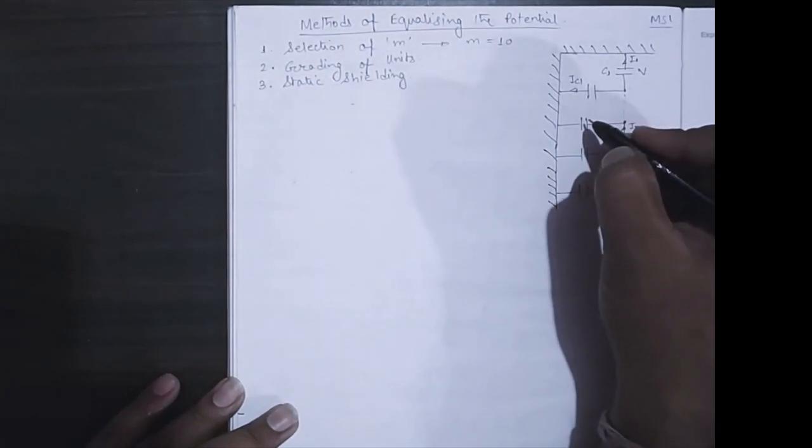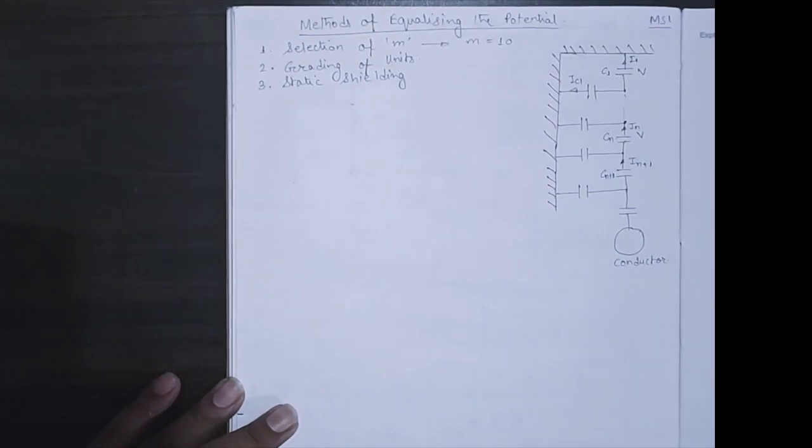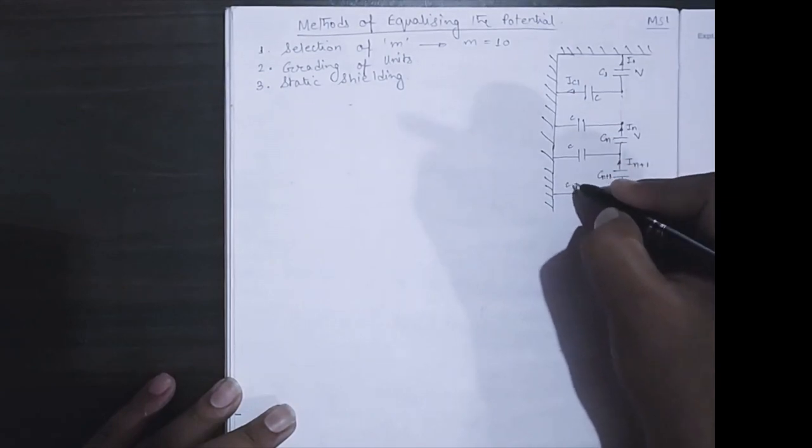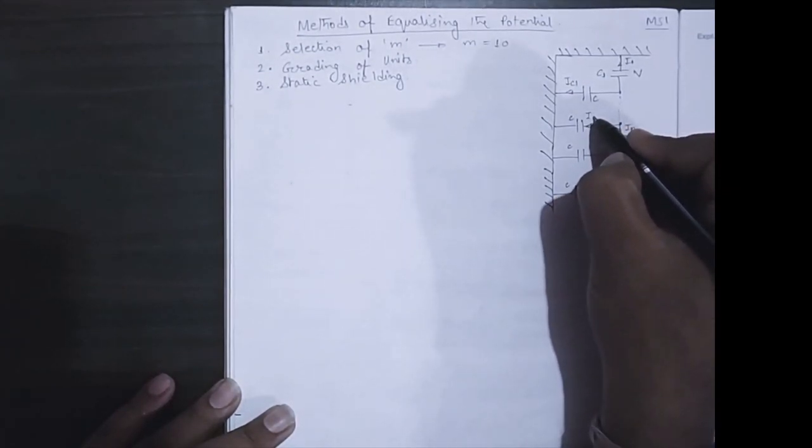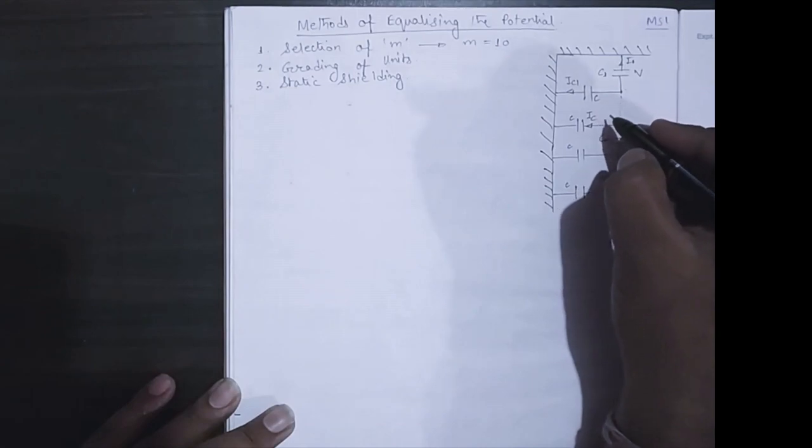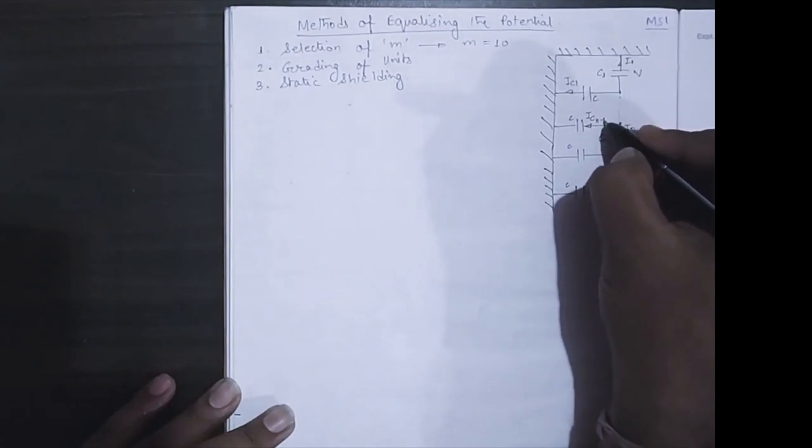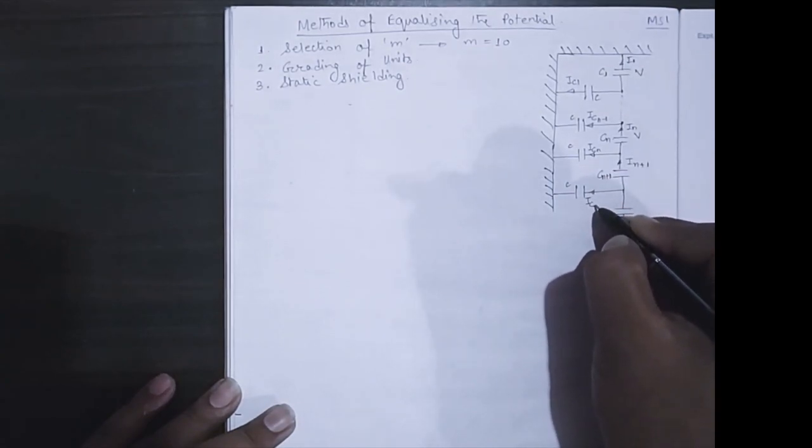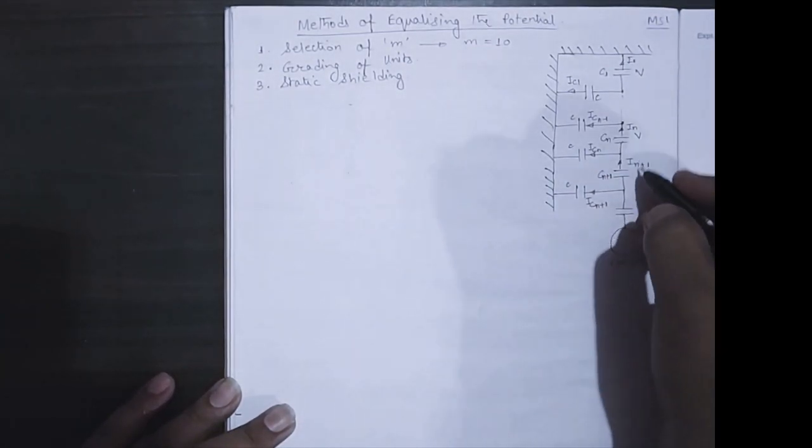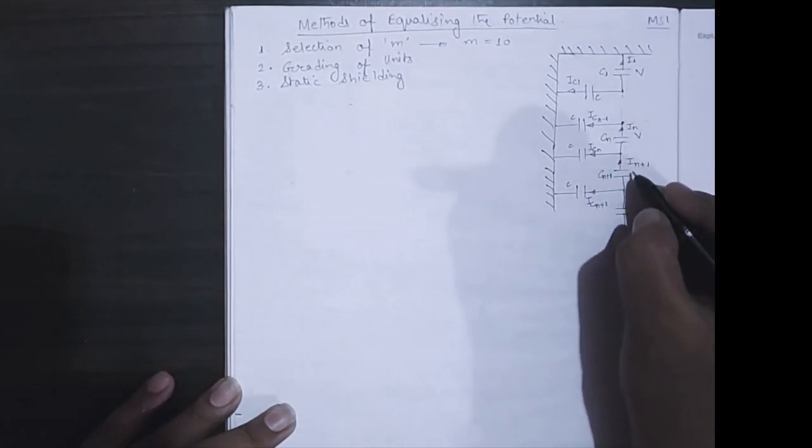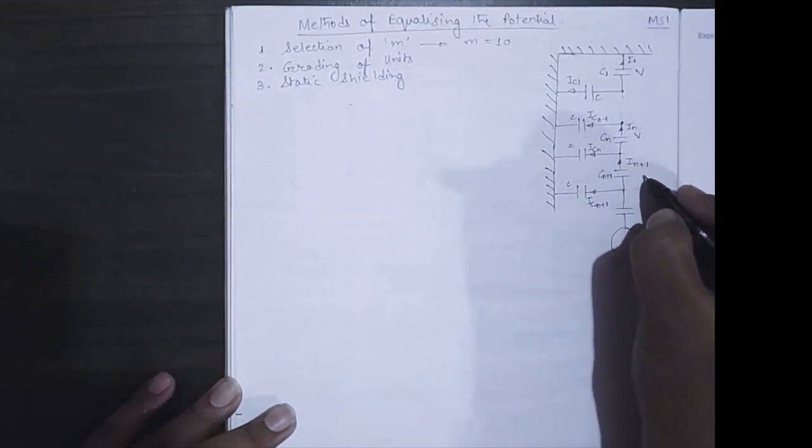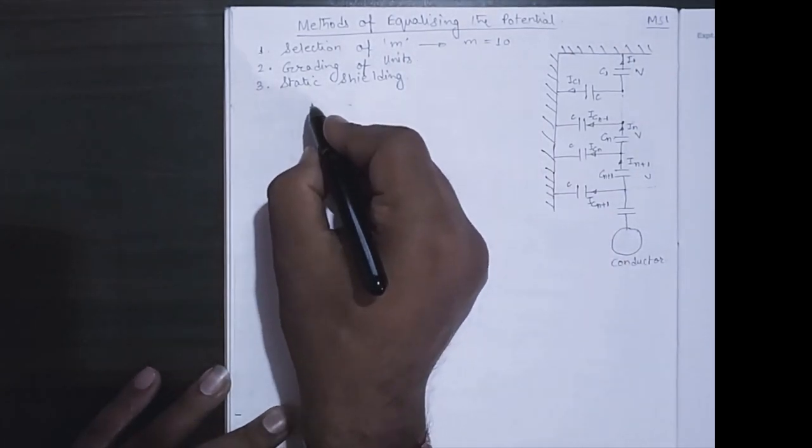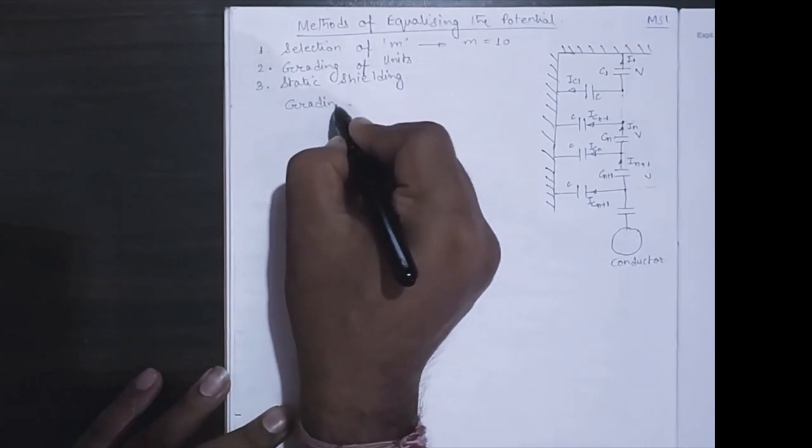This is cn. This is cn plus one. This is c. All these values are c. This is cn minus one. We will take it as n minus one. This will be cn and this is cn plus one. This current is icn plus one. So please notice that all these values have V, all the potential difference between the insulators is V.